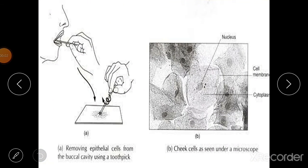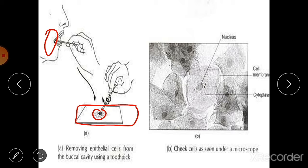Now let's do an activity. Take a glass slide used for a microscope, put a drop of water on it, then gently scrape the inside surface of your cheek with an ice cream spoon. With the help of a needle, transfer this material onto the glass slide and spread it evenly. Then put a drop of methylene blue solution — a stain — on the slide, put a cover slip on top, and observe under the microscope.